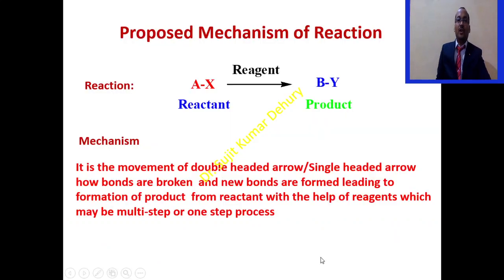So we all know what is a reaction. The reactants react with the reagents to give rise to the product. Usually the reactants are written on the left hand side, products are written on the right hand side, and the reagents are written on or just above the reaction arrow.